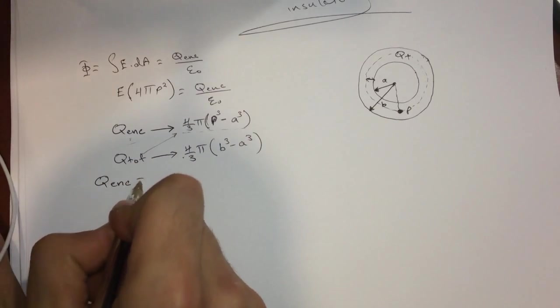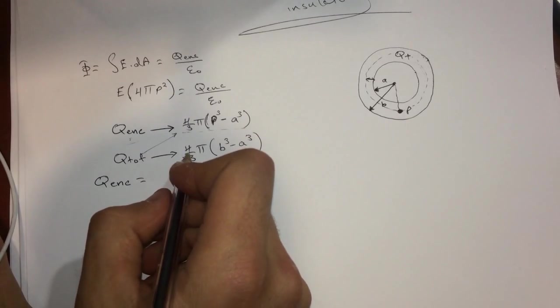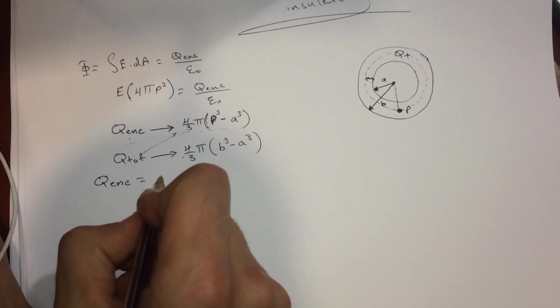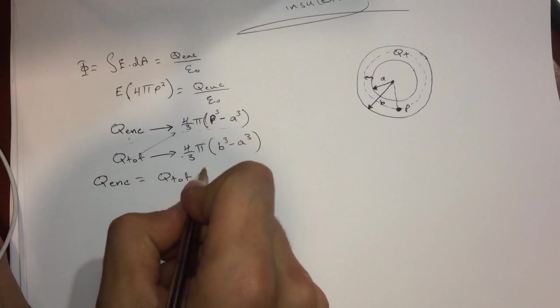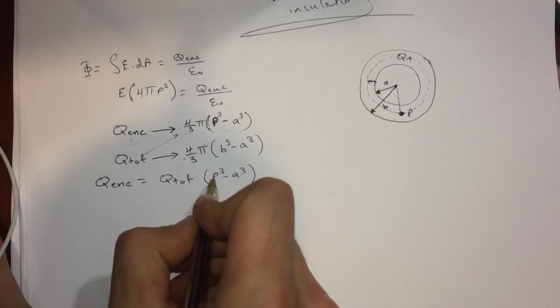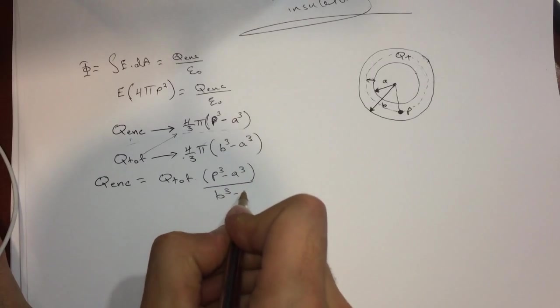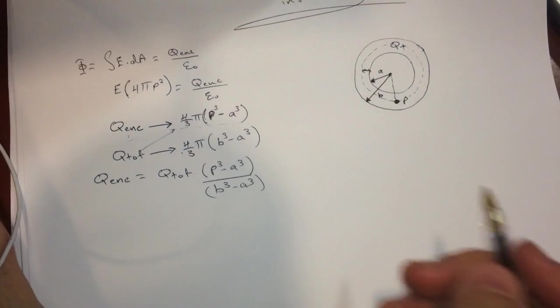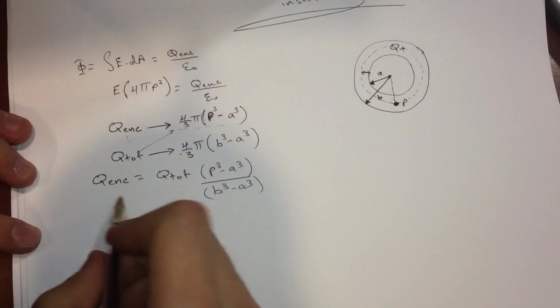So the Q enclosed will be equal to, and then when we divide this by this we'll get rid of those, so Q total and then the P³ minus A³ divided by B³ minus A³. All right, so now we got the Q enclosed.